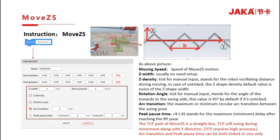Arc transition stands for swing pose when reaching the maximum or minimum position. Peak pose time with positive X or negative X means the pause time when the pose of RY reaches the maximum or minimum position, respectively. The TCP motion of MOVEZS is a straight line, and the TCP will swing along the Y axis. The robot requires high accuracy TCP when moving with MOVEZS path. Arc transition and peak pose time can be both ticked or one only.